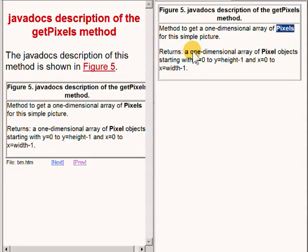It returns a one dimensional array of pixel objects starting with y equals 0 to y equals height minus 1 and x equals 0 to x equals width minus 1.